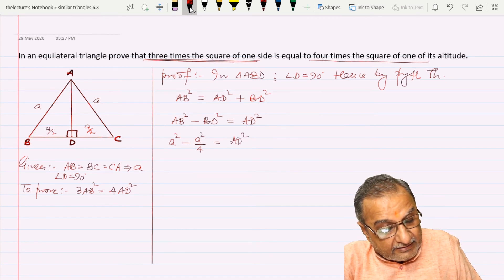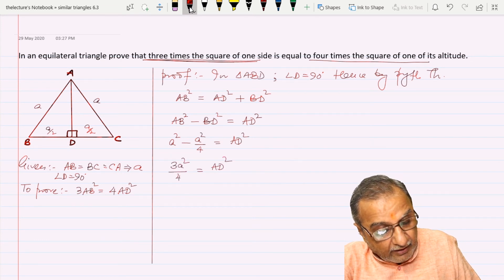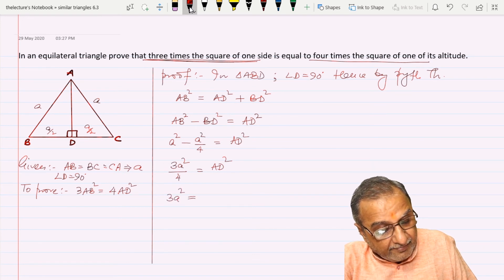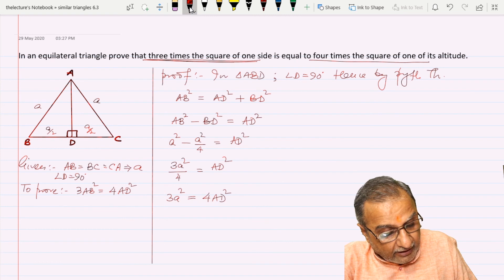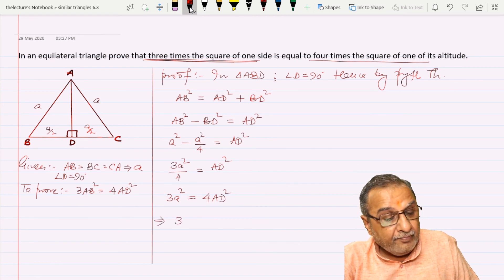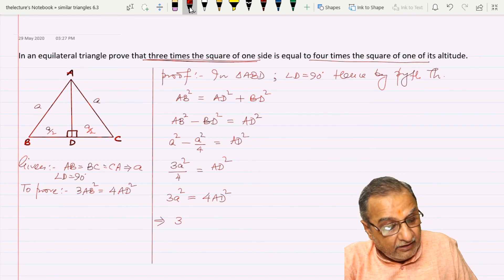Solving the left-hand side, I get 3A squared upon 4 equals AD squared. By cross multiplication, 4AD squared equals 3A squared, and all sides are equal.